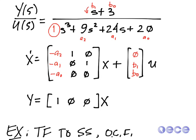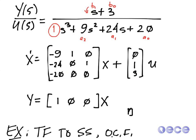Now I can take the values a2 through a0 and b1 through b0 and replace them. So minus a2 will be minus 9, minus a1 will be minus 24, and minus a0 will be minus 20. Likewise for the Bs: for b0 I will use 3, because that's how we labeled b0 above, and for b1, 1. I'll go ahead and write a zero here so that it all looks the same. So this is observable canonical form. Thank you.